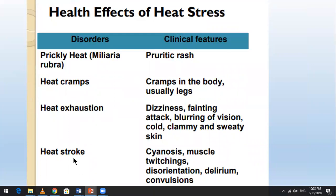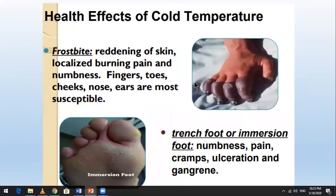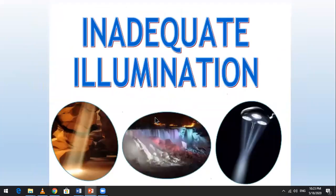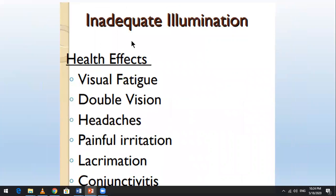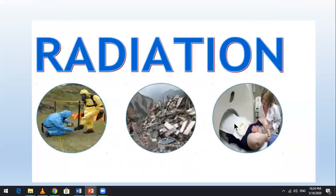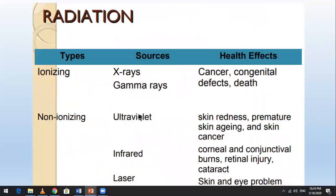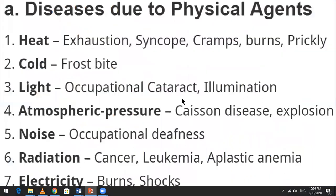Heat stroke is a very important physical hazard — the temperature causing heat stroke is considered a hazard. For illumination, health effects include visual fatigue, headaches, and painful irritation. Radiation is another type of physical hazard; it may involve ionizing radiation, which can be carcinogenic and cause related hazards.